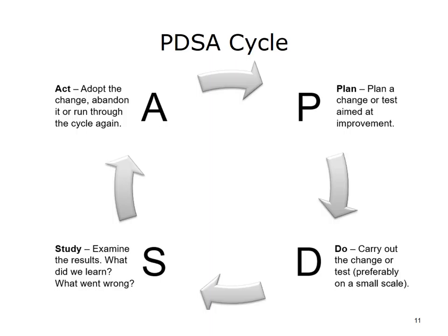Edward Deming derived what became known as the Deming Wheel, Deming Cycle, or Deming Circle from Walter Shewhart's 1939 three-step scientific process of Specification, Production, and Inspection. Deming presented it as a circle to stress the importance of constant interaction among the four steps of design, production, sales, and research. The PDCA Plan-Do-Check-Act cycle is often attributed to Deming and Shewhart, but Deming denied this connection. However, in 1993, Deming presented an evolved version as the Shewhart Cycle for Learning and Improvement, calling it the PDSA Plan-Do-Study-Act cycle.